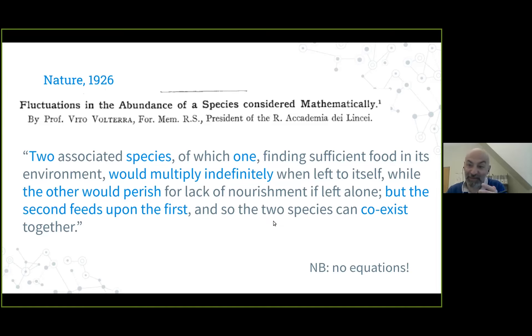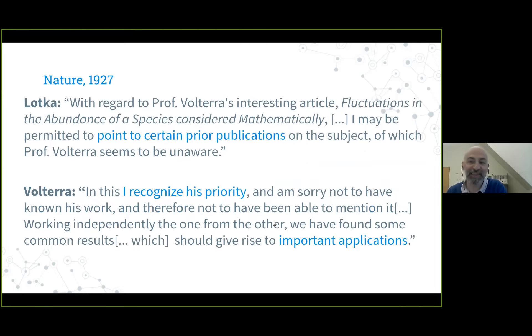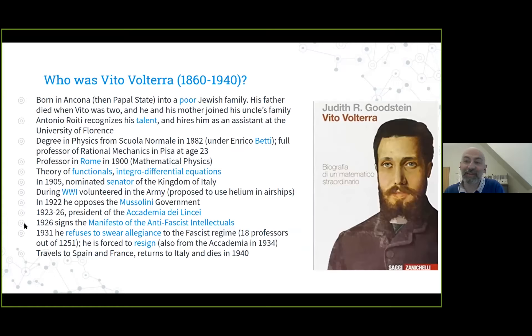Volterra considered two associated species of which one, finding sufficient food in its environment, would multiply indefinitely, so exponential growth when left to itself, while the other would perish for lack of nourishment if left alone. But the second feeds upon the first, and so the two species can coexist together. This paper, even though very short with no equations, did not go unnoticed. In 1927, you find this letter to the editor from Lotka saying, with regard to Professor Volterra's interesting article, I may be permitted to point to certain prior publications of which Professor Volterra seems to be unaware. Volterra very graciously recognized his priority.